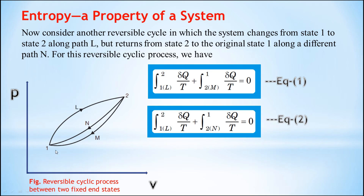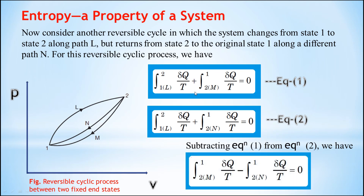Whenever we follow path M we get equation 1, and whenever the cycle follows return path N we get equation 2. Subtracting equation 1 from equation 2: in equation 1 and equation 2 the first term is common, so when we subtract equation 1 from equation 2 that term cancels out. The simplified result is: integral from 2M to 1 of δQ/T minus integral from 2N to 1 of δQ/T equals zero.